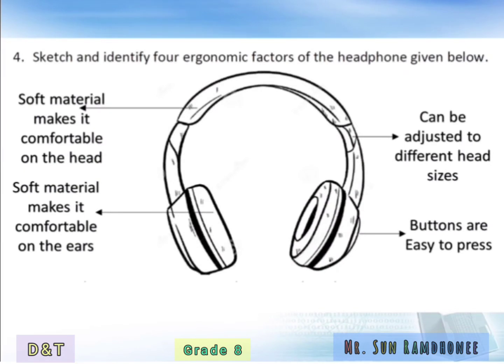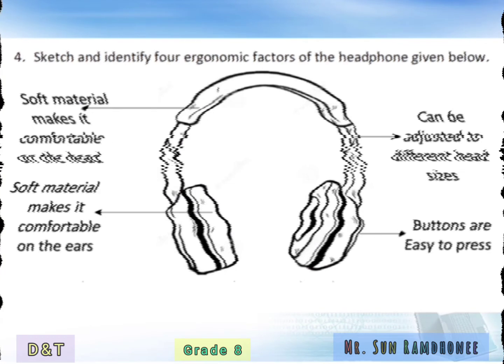Now we are going to identify four ergonomic factors of the headphone. From the arrows, we can see that soft material makes the headphone comfortable on the head, and the soft material also makes it comfortable on the ears. The headphone can be adjusted on the sides and it can be adjusted to various head sizes. Finally, the buttons are easy to press.